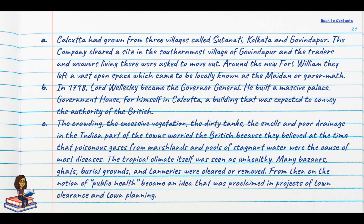In 1798, Lord Wellesley became the Governor-General and built a massive palace called Government House for himself in Calcutta — today it houses the Governor of West Bengal. The crowding, excessive vegetation, dirty tanks, smells and poor drainage in the Indian part of town worried the British, because they believed at the time that poisonous gases from marshlands and pools of stagnant water were the cause of most diseases, including malaria — the name itself comes from 'mal aria', meaning bad air.